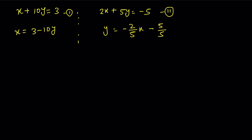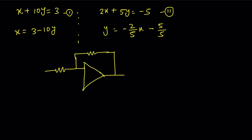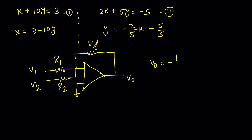Now, we already know that the adder circuit of the op-amp looks like this. I already have one video of the adder circuit in my channel. This is an inverting adder amplifier. Suppose this is R1, this is R2, and this is Rf. If the inputs are V1 and V2, we can write V0 = -(Rf/R1)·V1 - (Rf/R2)·V2. We already know this.